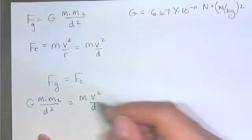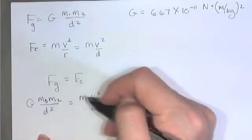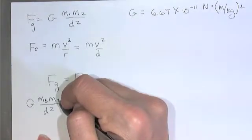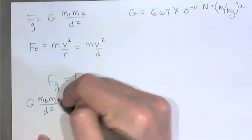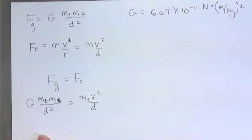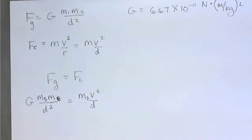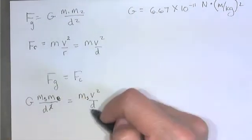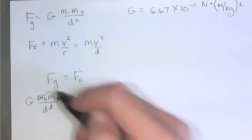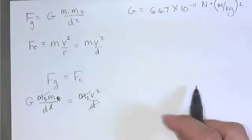So ms is the satellite and me is going to be the Earth, and you can look up the mass of the Earth, it's a constant. A d cancels on each side, the mass of the satellite cancels. So we don't even need the mass of the satellite.